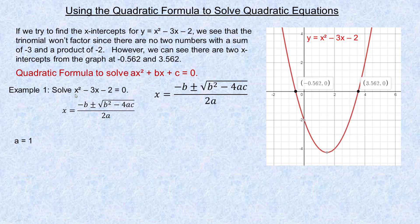a is 1 because it's a 1x squared. b is negative 3 because it's negative 3x. And c is negative 2 because there's a subtract 2 at the end of the equation. Don't forget the signs — some people make a mistake and say b is 3 or c is 2, missing the sign right before it. Those signs go with the 3 and the 2.